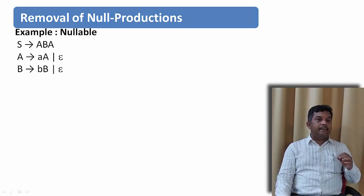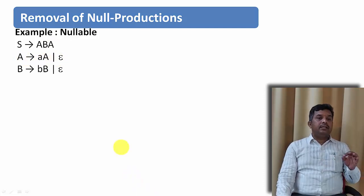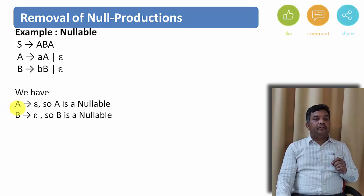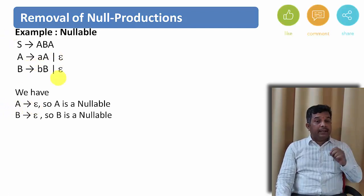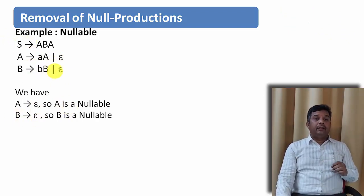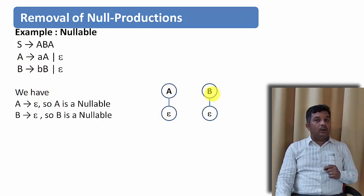Consider the grammar: S derives ABA; A derives AA or epsilon; B derives BB or epsilon. Here A derives epsilon is present, so A is a nullable variable. B derives epsilon is also available, so B is a nullable variable. It means from A we can directly reach epsilon, and from B we can directly reach epsilon.